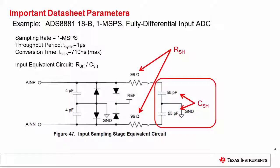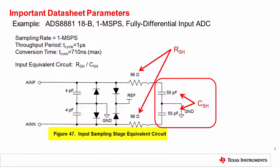In this presentation, we will use the ADS8881, an 18-bit 1-megasample-per-second converter, as our example. The equivalent input circuit shown here is taken from the datasheet. Most ADC datasheets have a similar equivalent input circuit schematic, and this is a good starting point for the SAR reference input model development. Remember, in the last section we learned that the sample and hold capacitor is actually part of the CDAC.